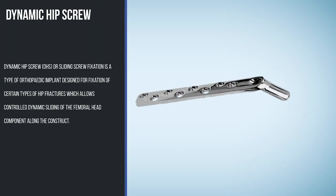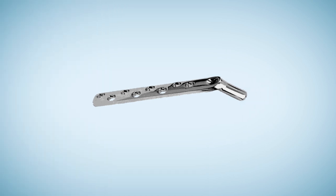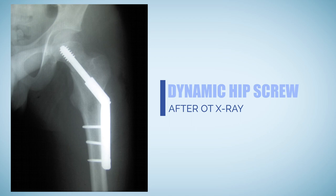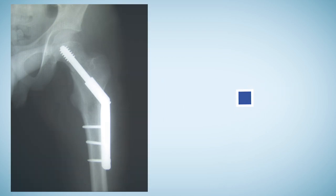Dynamic Hip Screw or Sliding Screw Fixation is a type of orthopedic implant designed for fixation of certain types of hip fractures which allows controlled dynamic sliding of the femoral head component along the construct. A dynamic hip screw is performed where the neck of the femur has been fractured and where there is a good chance that it will heal if held in place by internal fixation.